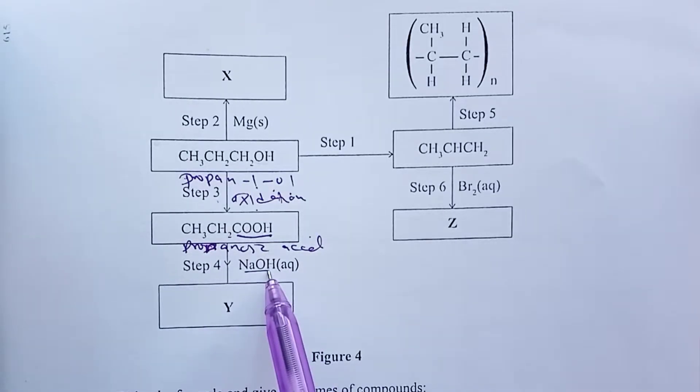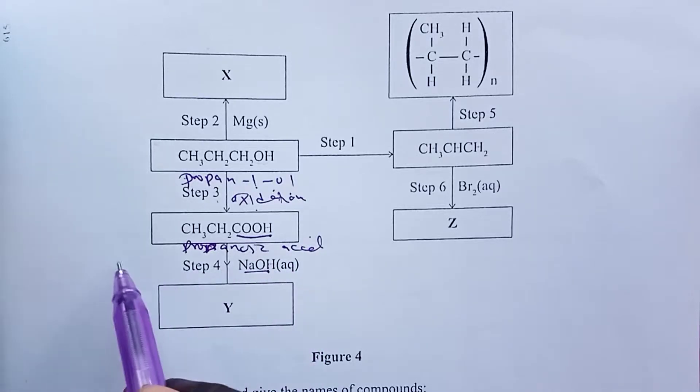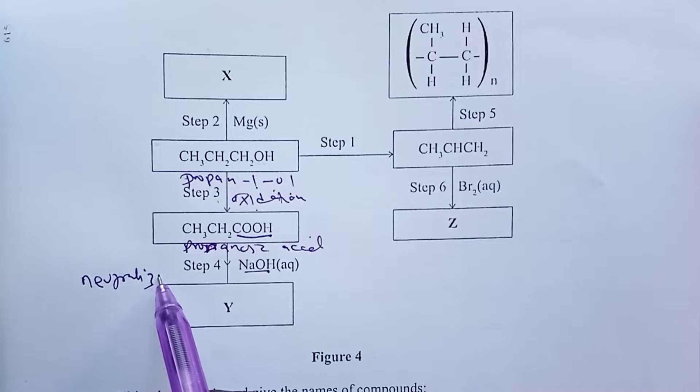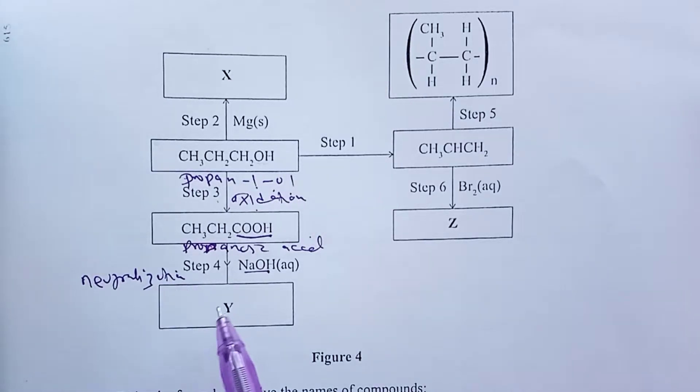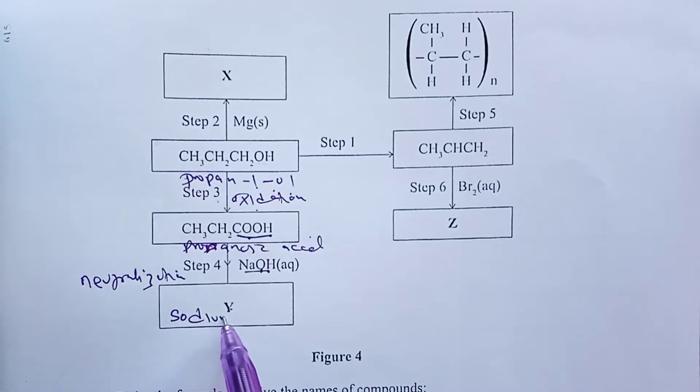Step four: we are reacting it with an alkali, sodium hydroxide. So this is actually neutralization. Step four is a neutralization process or reaction between an alkanoic acid and an alkali. So here we shall obtain a salt that is called sodium propanoate.